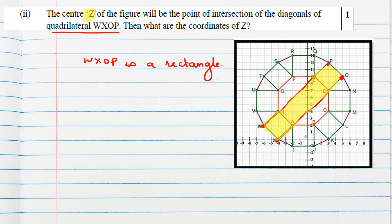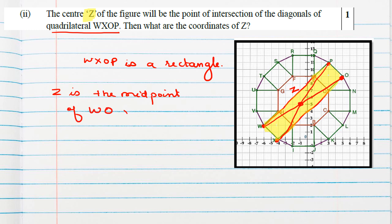Since the diagonals of a rectangle bisect each other, Z is the midpoint of diagonal XP as well as diagonal WO. So Z is the midpoint of WO and XP. We will find the midpoint using either diagonal — whether we take WO or XP, we can find the midpoint.